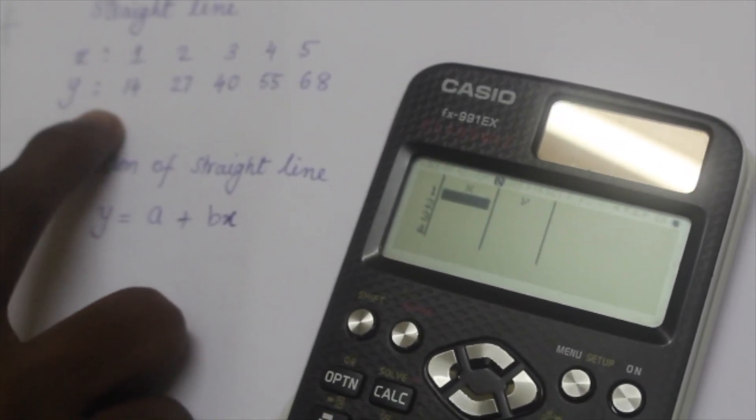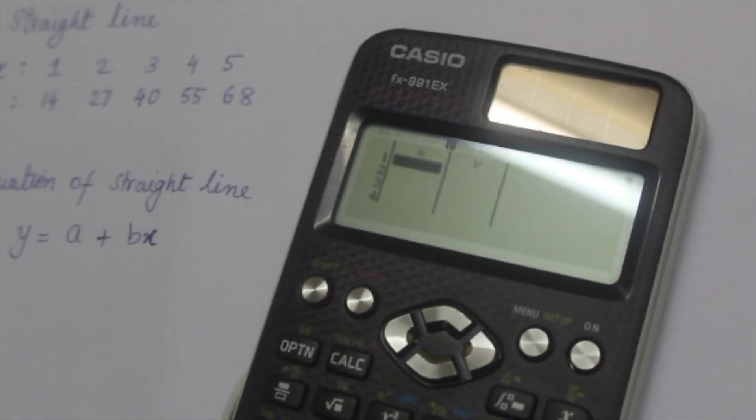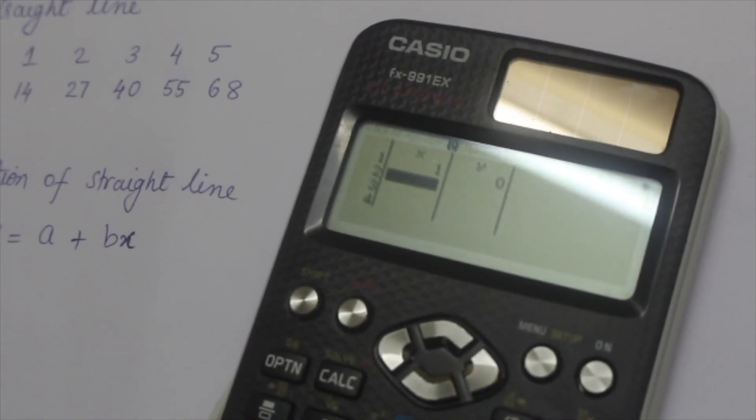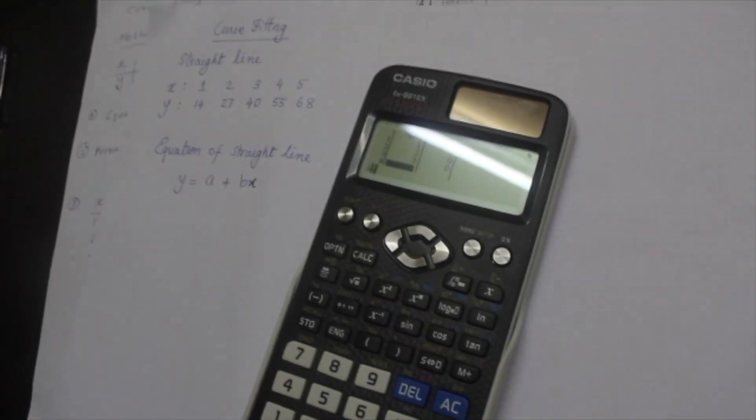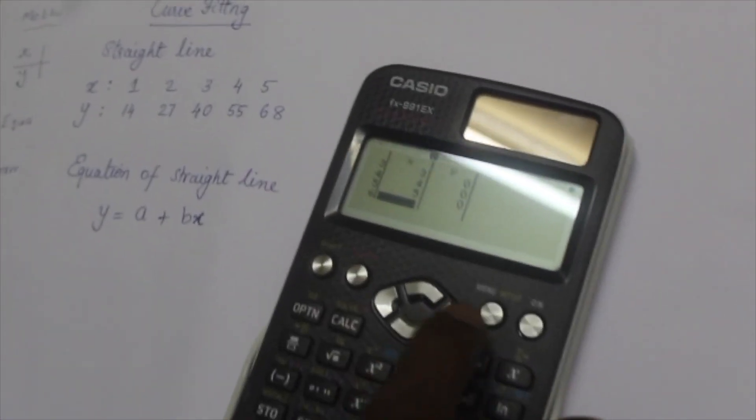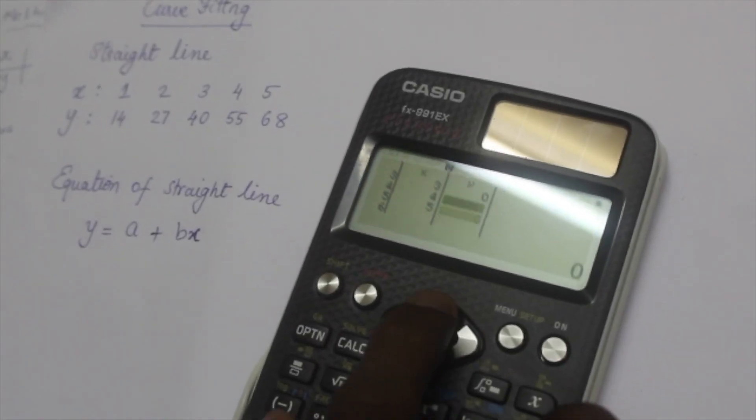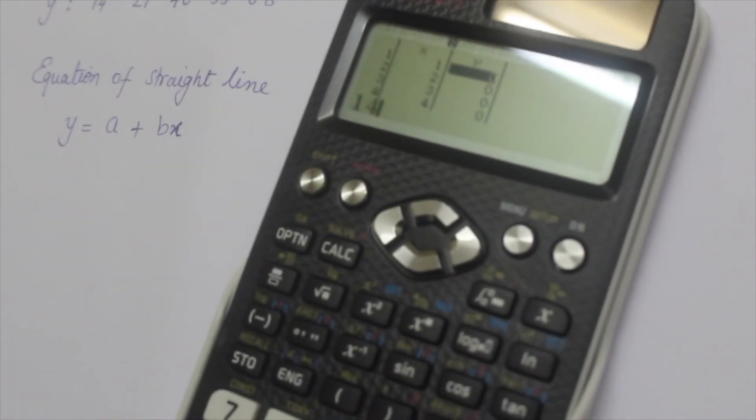Input the data for x and y values in this table. Press to fill in the value. Then press the right arrow and you can jump to the column for y. Input the value for y and press equal.